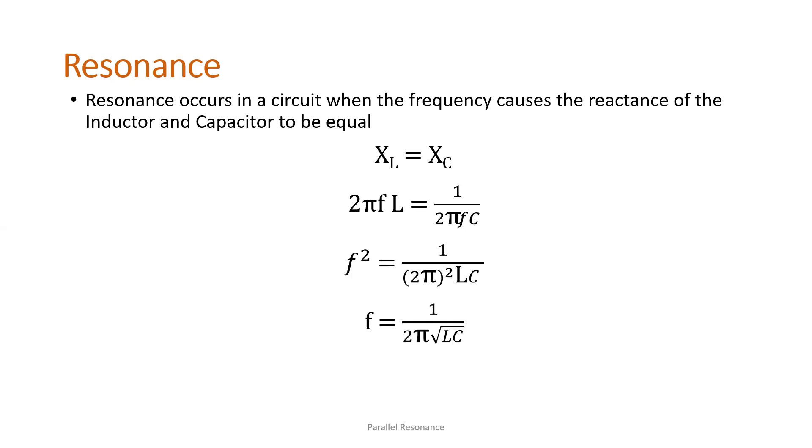Still we have the same formula in getting the resonant frequency, just like the one we had in the series resonance. So F sub R is equal to 1 over 2 pi square root of L multiplied by C, or the inductance multiplied by the capacitance.